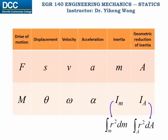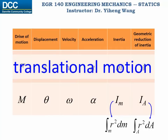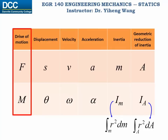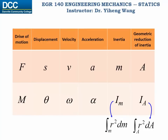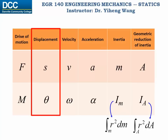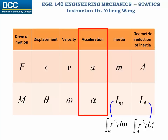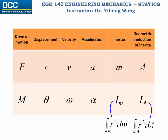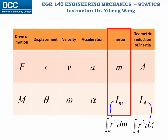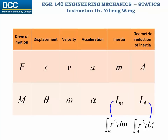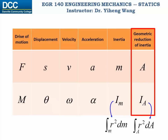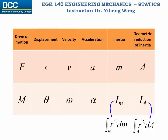The first row of this table deals with translational motion, and the second row deals with rotational motion. For the driving force, we have force versus moment of the force. For displacement, we have linear displacement s versus angular displacement theta. For velocity, we have linear velocity v versus angular velocity omega. For acceleration, we have linear acceleration a versus angular acceleration alpha. For inertia or resistance to motion, we have mass versus mass moment of inertia. And lastly, for the 2D geometric reduction of inertia, we have area versus area moment of inertia. Hopefully, this table can help you better understand the concepts of moments of inertia.